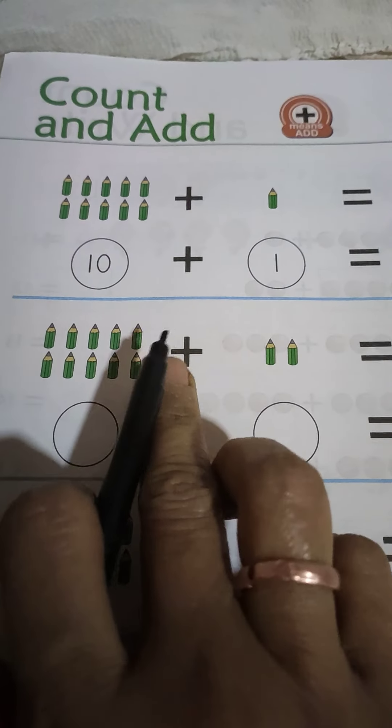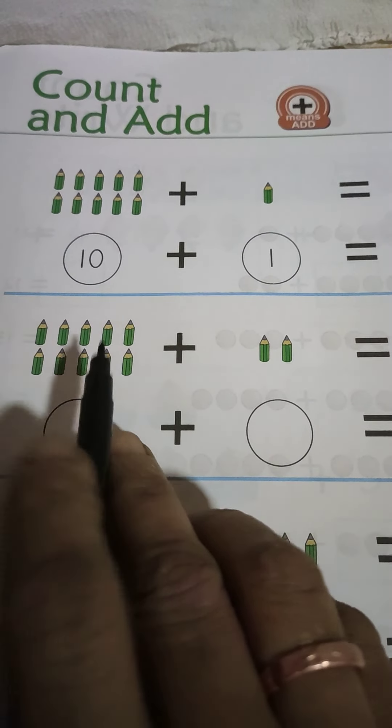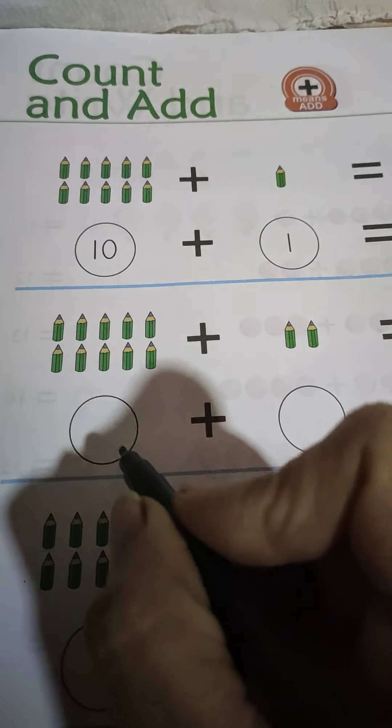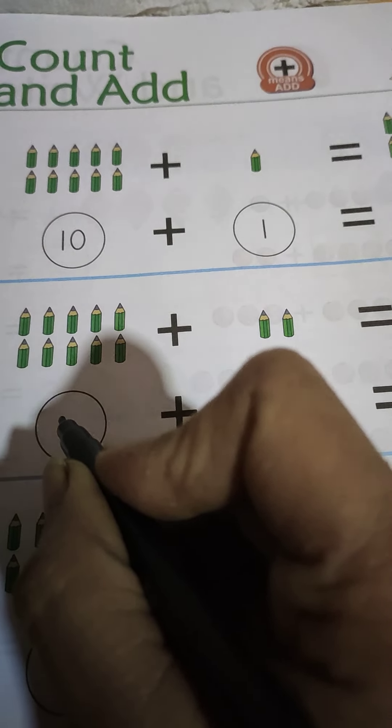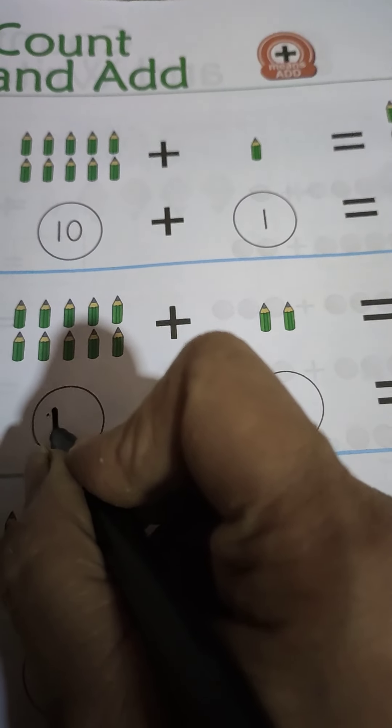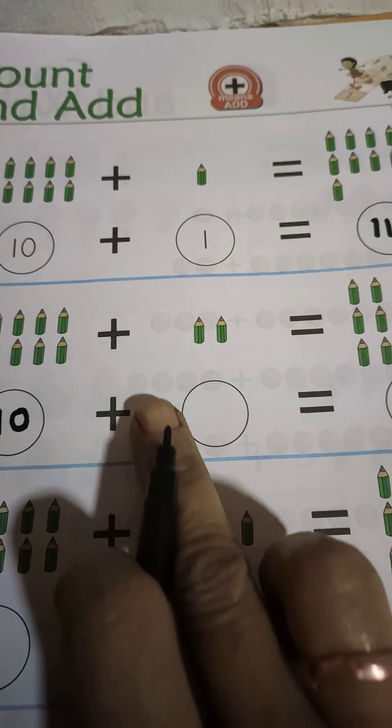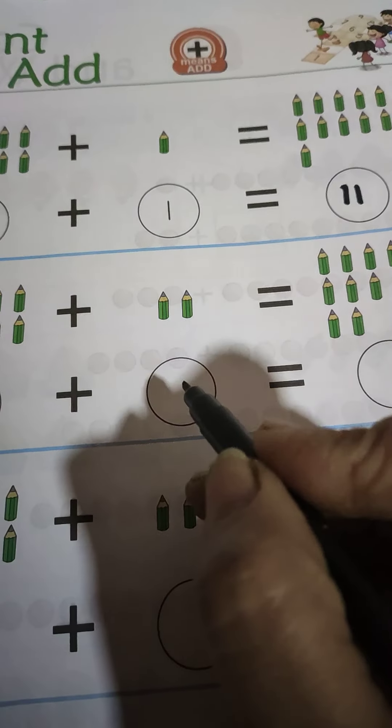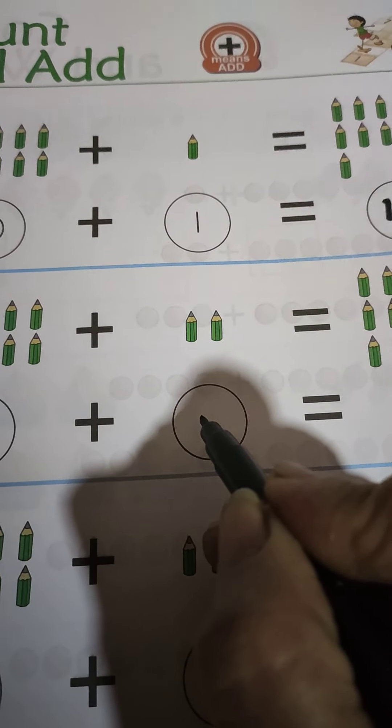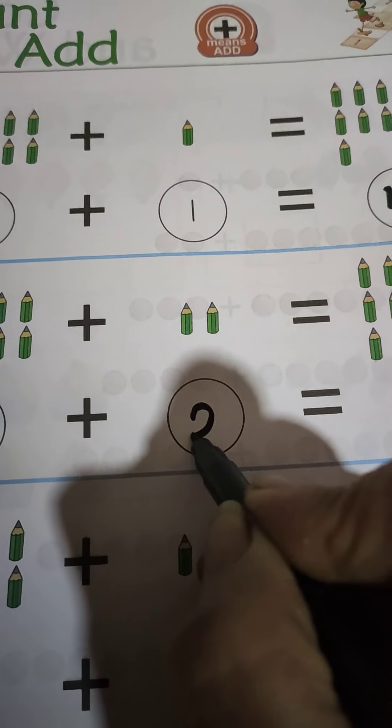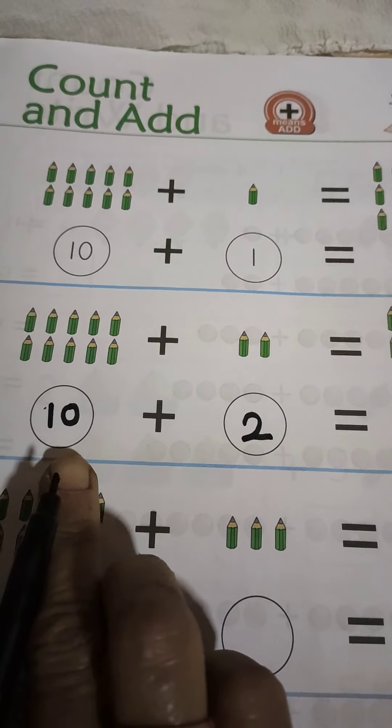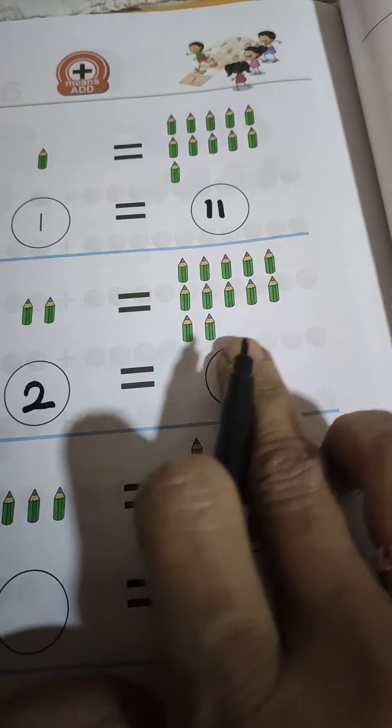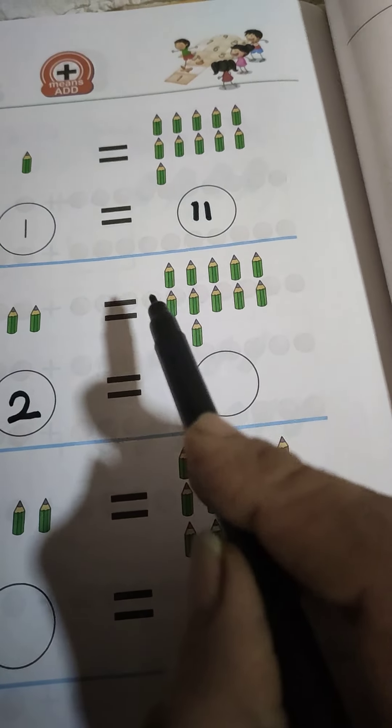Kids, here we have a set of 10 pencils. How many? 10 pencils. So we'll write over here 10. 10 plus here we have 1, 2. How many pencils? 2 pencils. 10 plus 2 all together. Come on. 10 plus 2.